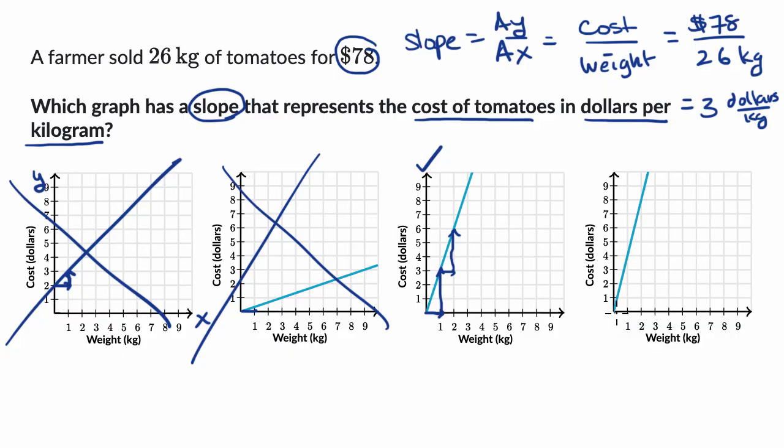Here, it looks like every time we increase kilograms by one, our dollars increase by four. So I will also rule that one out. So I like this choice right over there.